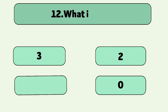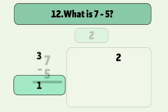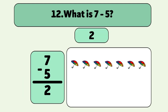What is seven minus five? The answer is two. We start with seven umbrellas and take away five. Let's count. One, two, three, four, five. We have two umbrellas now.